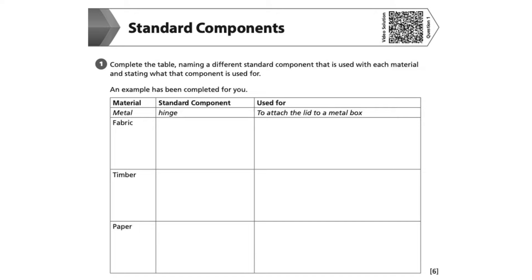In this question, we are asked to complete the table, naming a different standard component that is used with each material and stating what that component is used for. We are told that an example has been completed for us. The material area given is metal, the standard component is a hinge, and its use is to attach the lid to a metal box.